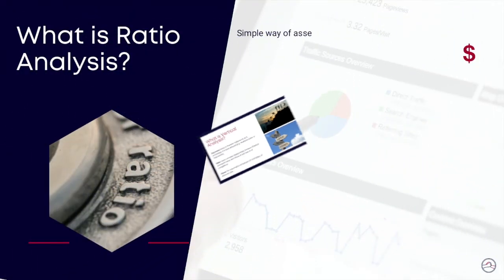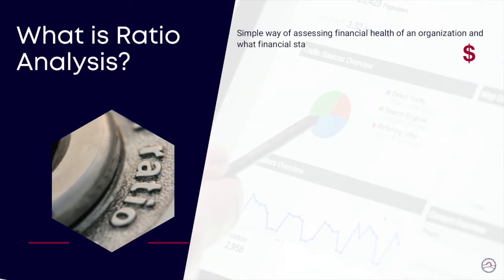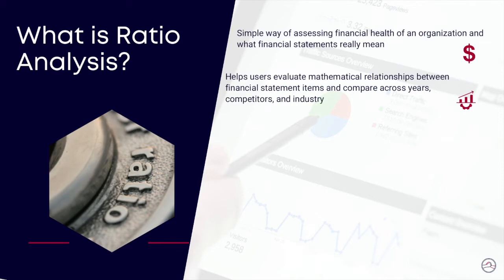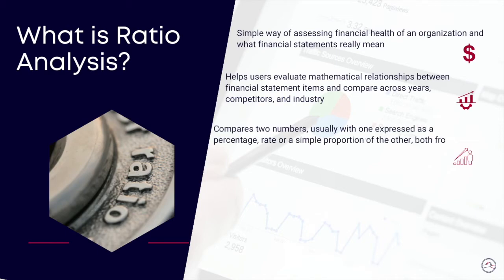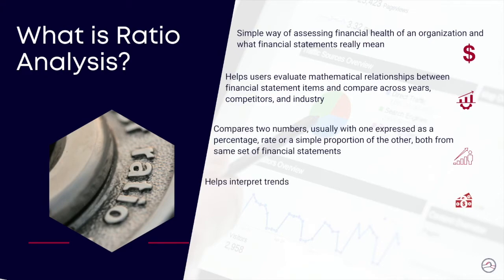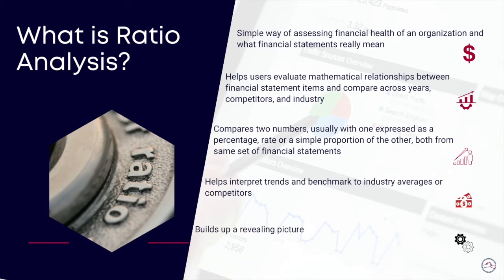The third and final technique to interpret financial statements is ratio analysis. This technique helps us understand the financial health of an organization by assessing past periods, planned performance, and similar businesses. Ratio analysis looks at mathematical relationships between different financial statement items. These results are compared with other variables over a period of time against competitors or industry standards. It is usually executed by comparing two numbers from financial statements, expressed either as a percentage or a proportion. This technique paints a picture of the financial position and performance of an organization and leads to asking the right questions and spotting strengths and weaknesses.